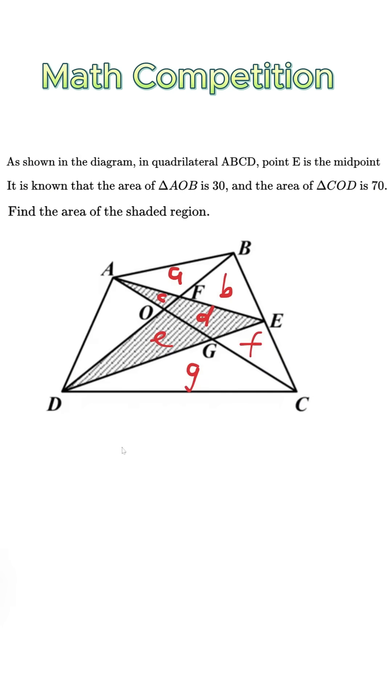Area of triangle ABO equals a plus c equals 30. Area of triangle CDO equals e plus g equals 70. Since E is the midpoint of BC, area of triangle BED equals area of triangle CED, which gives us f plus g equals b plus d plus e.